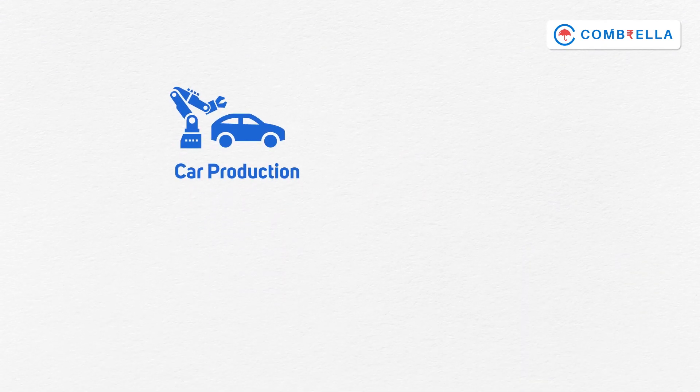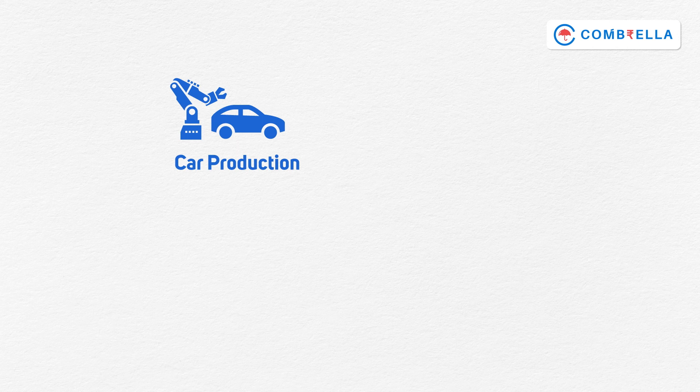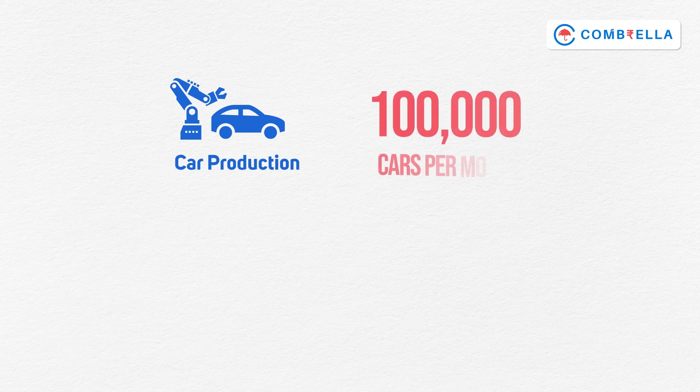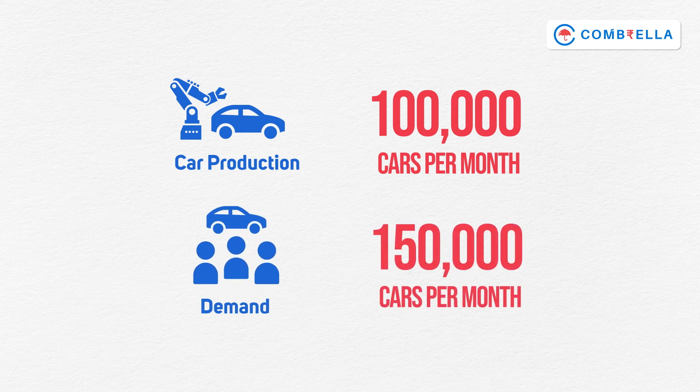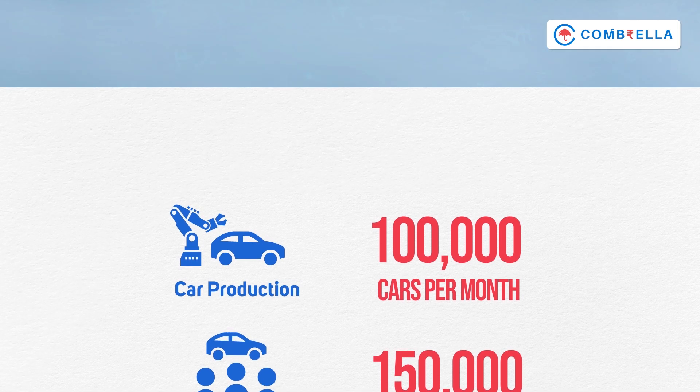But increasing the supply is not so easy. Let us take an example. In India, the total production capacity of cars by all the companies is 1 lakh cars per month. But the demand for cars right now is 1 lakh 50,000 cars per month. There is a demand and supply gap. If you want to increase the supply of cars, you need to build more factories and plants, and all this will take a lot of time. This is applicable for any product. Increasing the supply is not so easy in a short span of time.